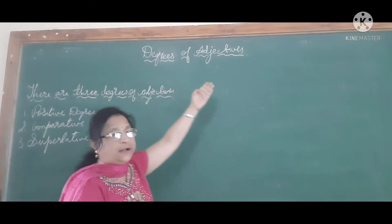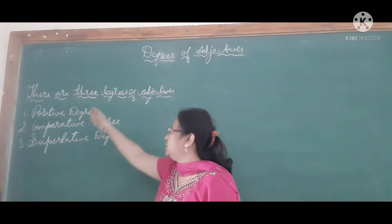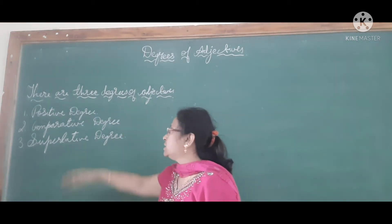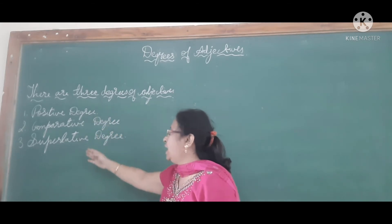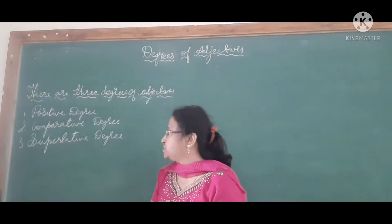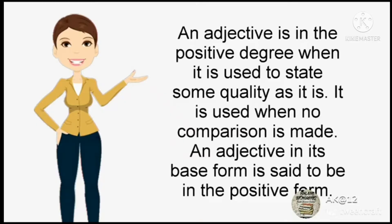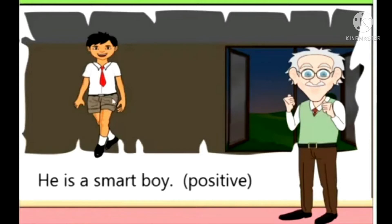Now we will learn about the degrees of adjectives. There are three degrees of adjectives. They are positive degree, comparative degree, and superlative degree. An adjective is in the positive degree when it is used to state some quality as it is — used when no comparison is made. An adjective in its base form is in the positive form. Example: he is a smart boy — the boy is not compared with any other boy.